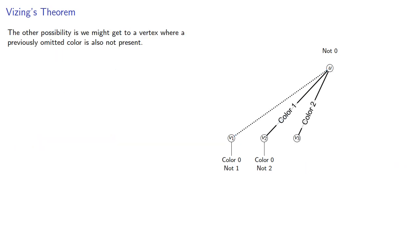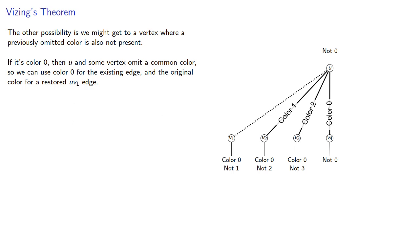The other possibility is we might get to a vertex where a previously omitted color is also not present. If it's color 0, then u and some vertex omit a common color, so we can use the color 0 for the existing edge and the original color for a restored uv1 edge. And that's a contradiction because it produces a larger graph with the same chromatic number.